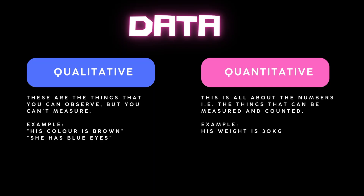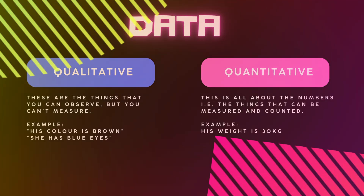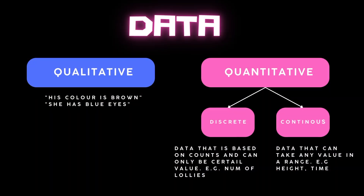And what is quantitative data? It's all about the numbers — things that can be measured and counted. It can be the weight of somebody, the sales value of a product, or anything that can be measured. This quantitative data is further divided into two categories: discrete and continuous.